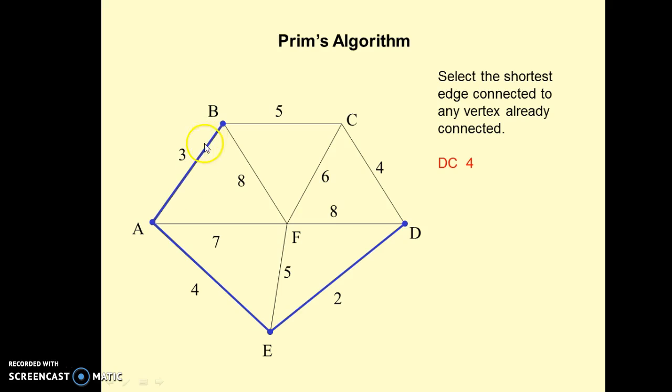Now A, B, E, and D will be the active nodes. So we will find out the edges which have the minimum weight. That will become DC, which is 4. So we will connect D and C.